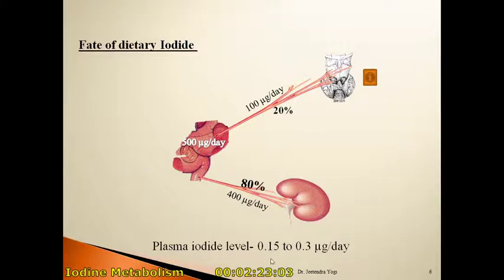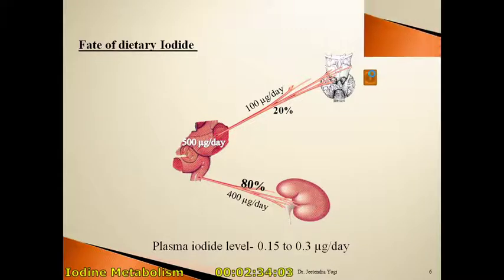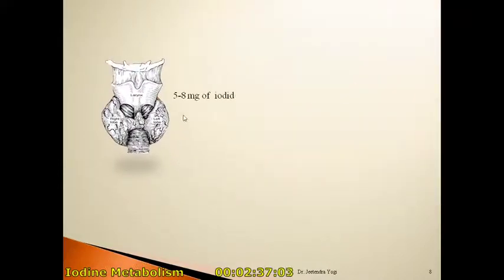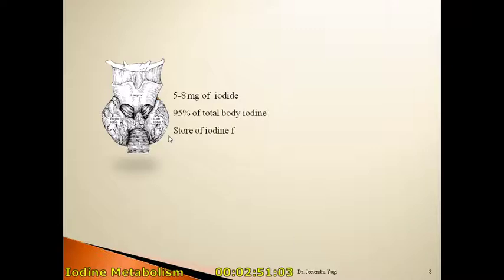The plasma iodide level remains around 0.15 to 0.3 micrograms per day. Around 5 to 8 milligrams of iodide is stored in the thyroid gland of an adult, which is around 95 percent of total body iodide. This is the main storage site of iodine, and it can maintain the euthyroid level for 3 months in an individual without any synthesis of new thyroid hormone.